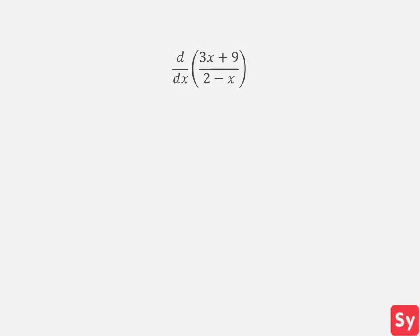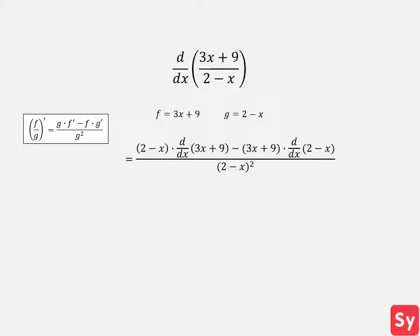Here's our first example. We want to compute the derivative of 3x plus 9 over 2 minus x. We see that we have one function f divided by another function g, so we can use the quotient rule. This equals 2 minus x times the derivative of 3x plus 9, minus 3x plus 9 times the derivative of 2 minus x, all over 2 minus x squared.